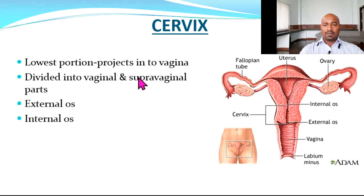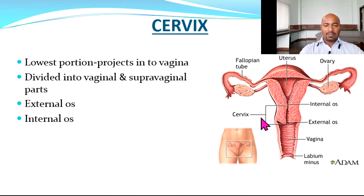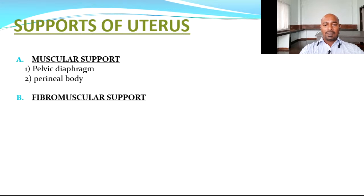The cervix is the lowest portion of the uterus which projects into the vagina. It is divided into a vaginal part and a supravaginal part. It has a vaginal-side opening called the external os and a uterus-side opening called the internal os.